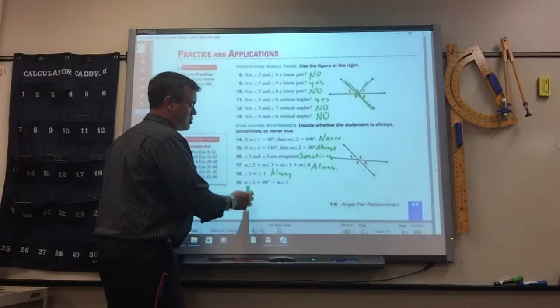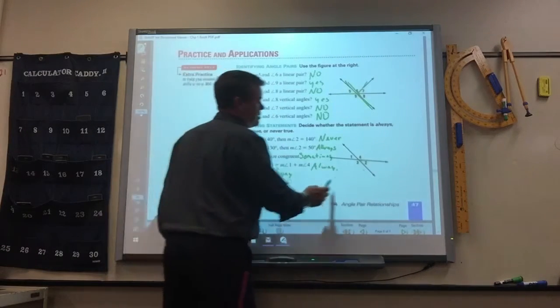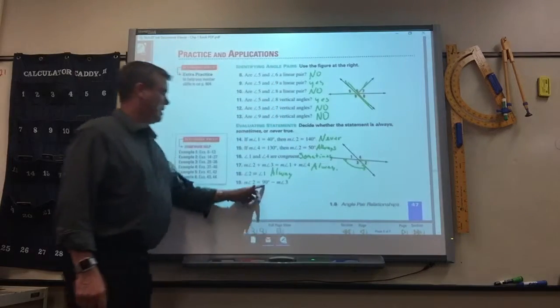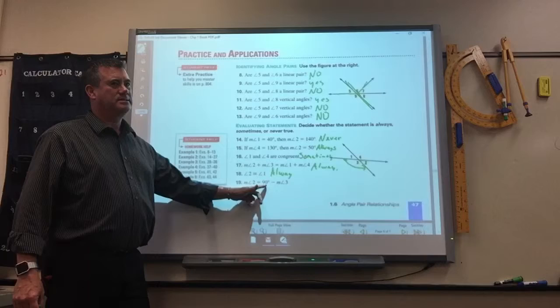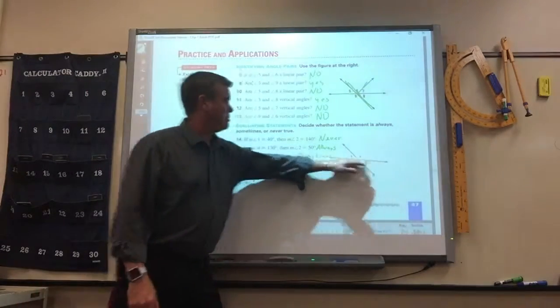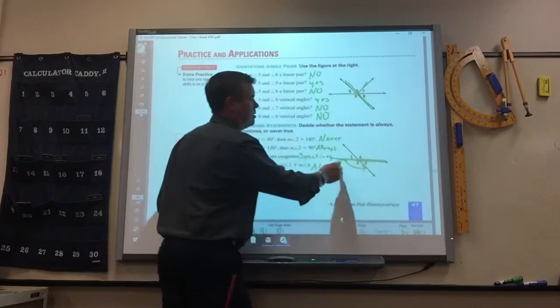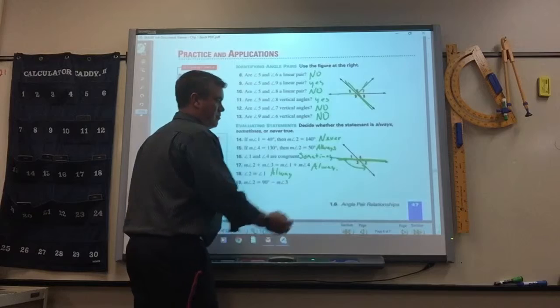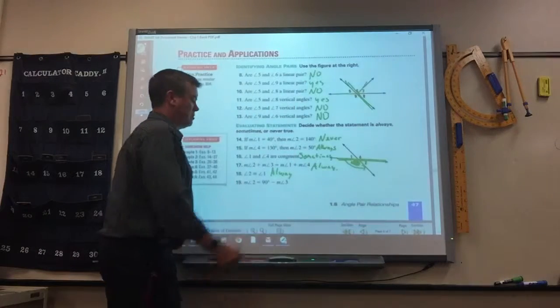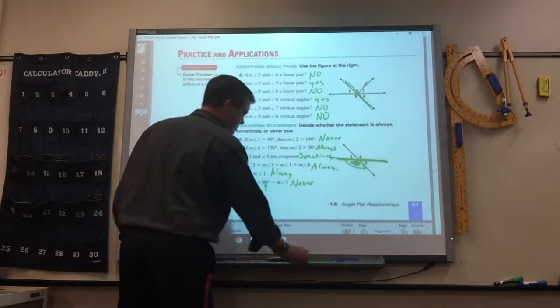And the measure of angle 2 equals 90 minus 3. Yes. Always. Never. Never. Never. What is it minus 3? You wouldn't take 90 minus 3. What would you do? I'd take 180. 180 minus. Because if you've got to take the 180 and you subtract 3, that will give you angle 2. Wait, do we have to put that down? No. It's never. Never.